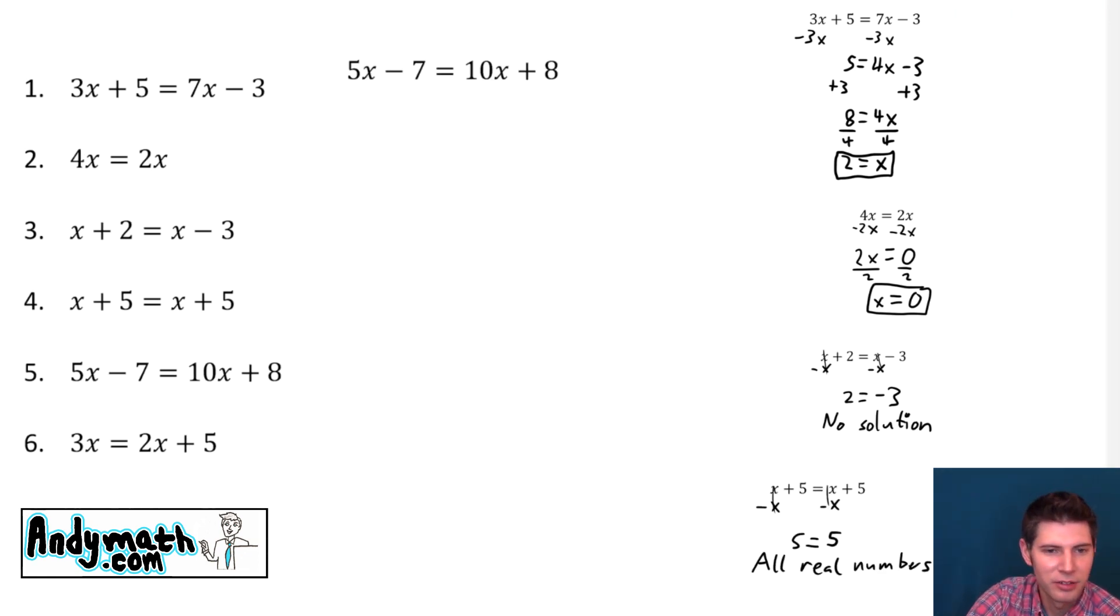Next, let's do number 5. So now we have slightly larger numbers here—a 5x and a 10x and a 7 and 8—but we can still do the exact same steps. We want to get all the x's to one side first, so we're going to subtract 5x. 10x minus 5x is 5x, and these cancel. Bring down the negative 7, bring down the 8, and now we're ready for our next step.